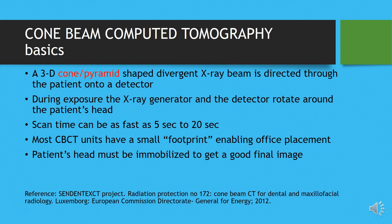During the exposure, just like the OPG machine, the X-ray generator and the detector rotate around the patient. The scan time depends on the area you are trying to cover — it can be as fast as 5 seconds to 20 seconds. Most CBCT machines have a very small footprint; some smaller CBCT machines available on the market are actually smaller in size than an OPG machine. The patient's head must be immobilized to get a good final image.